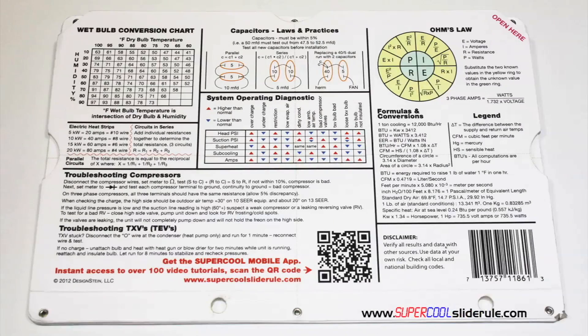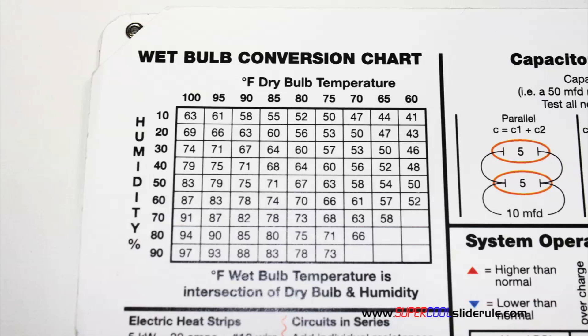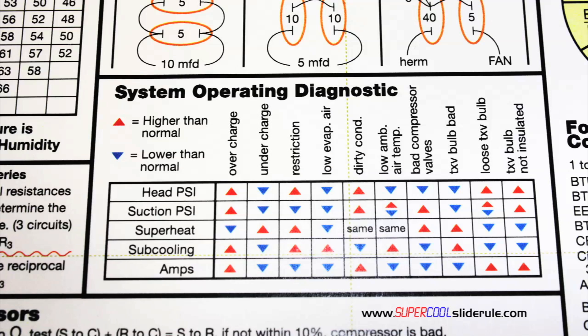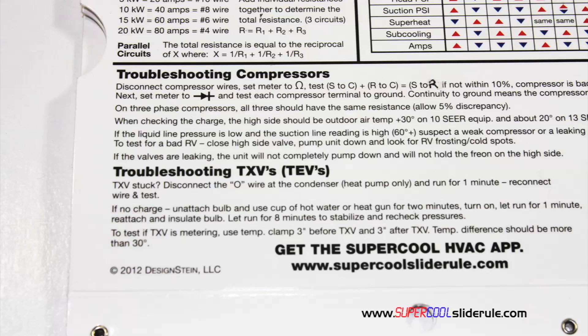The back cover contains required formulas. It has capacitor rules and practices, a wet bulb conversion chart, how to perform computations on series or parallel circuits, an electric heat strip guide, a complete system troubleshooting diagnostic chart, and how to troubleshoot compressors and TXV.